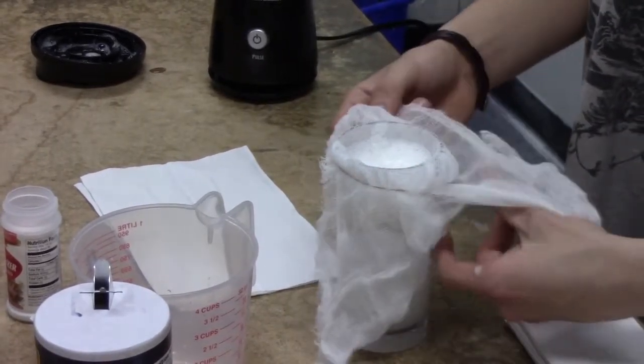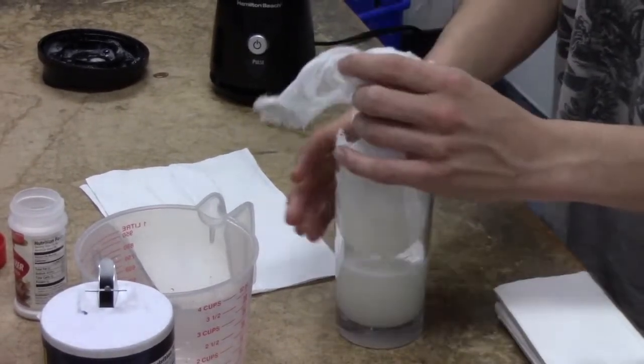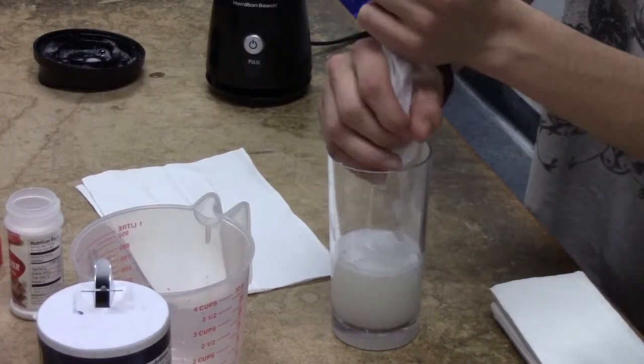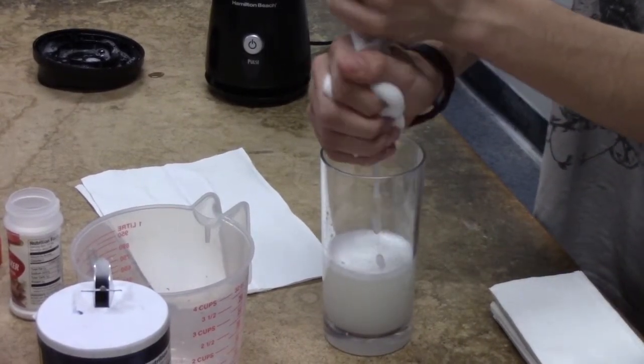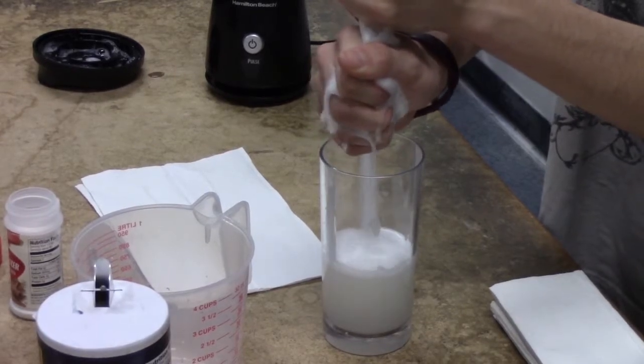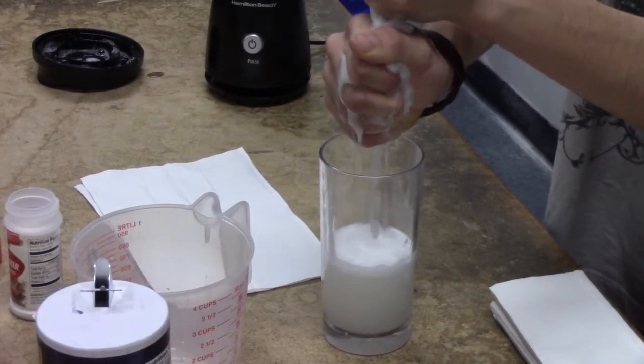Before taking the cloth off the cup, we're going to give it a good squeeze so that we can get out any onion juice that has been left behind. Don't be afraid to get messy, make sure to get all of it in there.